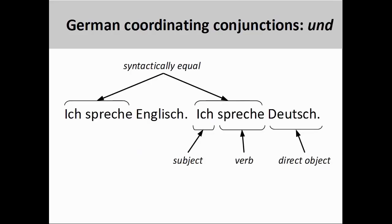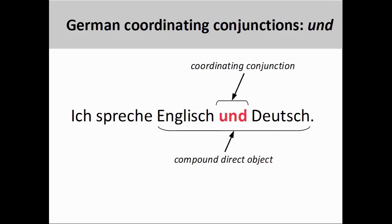As in English, the coordinating conjunction und, meaning AND, can be used to simplify sentences where there is syntactic equality. The two sentences on the screen — a translation of the sentences from the beginning of the presentation — share the same first-person singular personal pronoun in the nominative case, ich, and a first-person singular present tense verb, spreche. As these sentence elements are syntactically equal, we can remove the redundant elements and join the remaining direct objects with a coordinating conjunction, und. This creates the compound direct object you see on the screen.